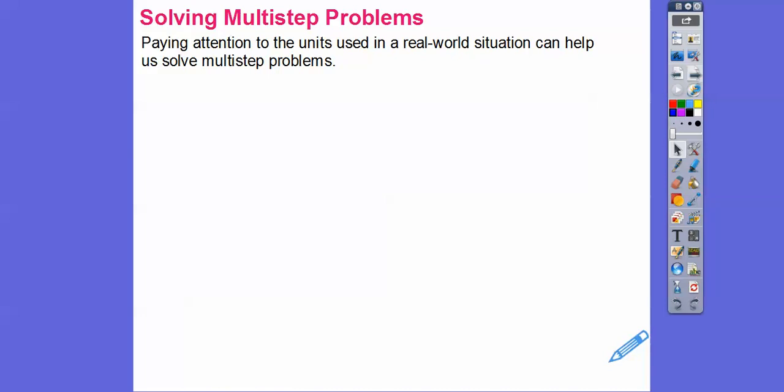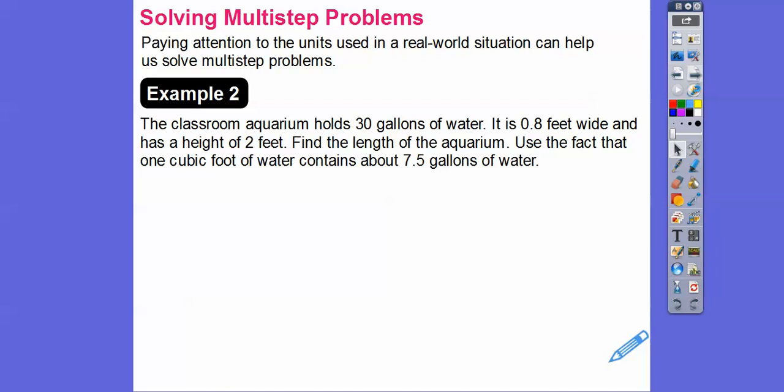All right, so paying attention to the units used in real-life situations helps us solve multi-step problems. If we have different units, we've got to convert everything so they're all to the same unit. Here's an example. The classroom aquarium holds 30 gallons of water. It is 0.8 feet (that represents 8/10) wide and has a height of 2 feet. Find the length of the aquarium. Use the fact that 1 cubic foot of water contains about 7.5 gallons of water.